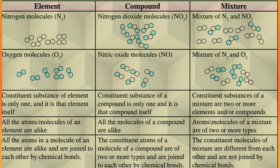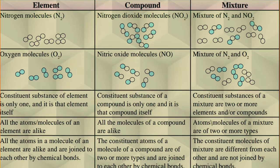All the atoms in a molecule of an element are alike and are joined to each other by chemical bonds. In a compound, the constituent atoms of a molecule are of two or more types and are joined by chemical bonds. In a mixture, the constituent molecules are different from each other and are NOT joined by a chemical bond. Atoms or molecules of different elements are different. The proportion of constituent elements in a compound is constant. And in a mixture, the proportion of constituent substances can change.